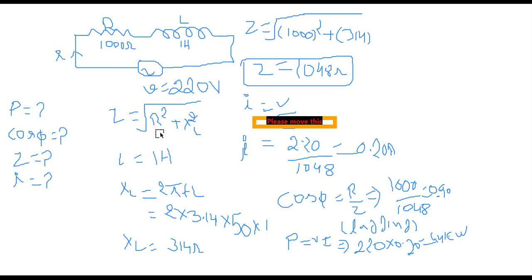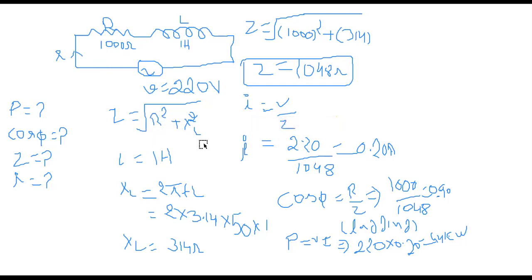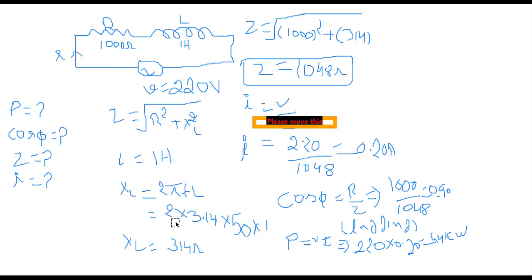The formula for impedance is Z = √(R² + XL²). The value of resistance is 1000 ohms, but the value of XL is not given, so we use the formula XL = 2πfL to find it.